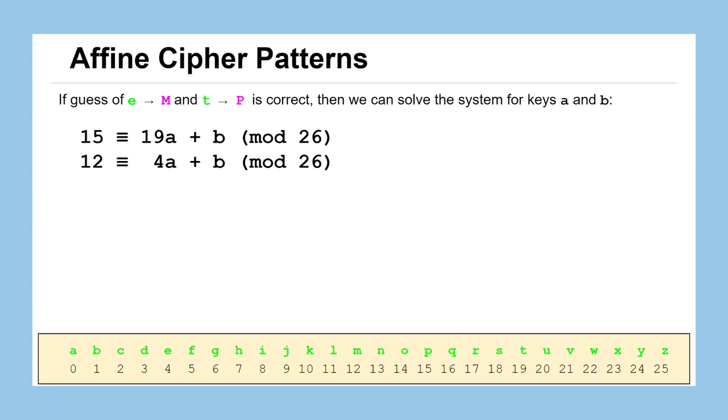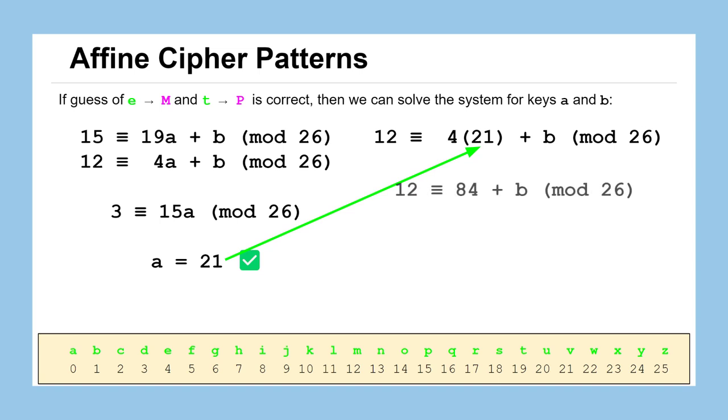And as we've learned in our previous lesson, we can solve this system by subtracting the second equation from the first to eliminate the variable B and the new congruency that's set up, that 3 is congruent to 15A mod 26. And we can solve this by multiplying both sides by the multiplicative inverse of 15, which if you remember is 7. So we can determine that A, the multiplicative key, must be equal to 21. And now we can substitute that in to one of the two equations. Here I've chosen the second one, slightly smaller numbers to work with, to get the congruency that 12 is congruent to 4 times 21 plus B, or 12 is congruent to 84 plus B, or negative 72 is congruent to B, and then we mod that by 26 to find that B is equal to 6. And now we've got both the multiplicative and additive key figured out for our ciphertext. We should be able to use those to recover the entire plaintext, not just the two letters that we've guessed.